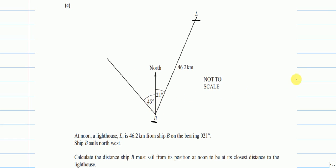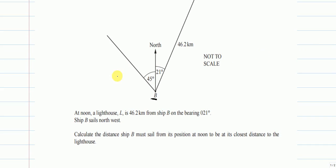Calculate the distance ship B must sail from its position at noon to be at its closest distance to the lighthouse.